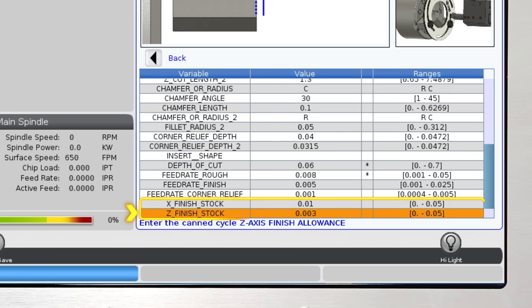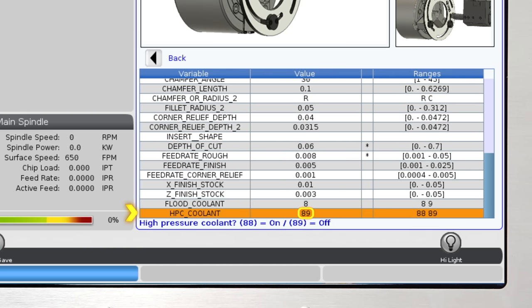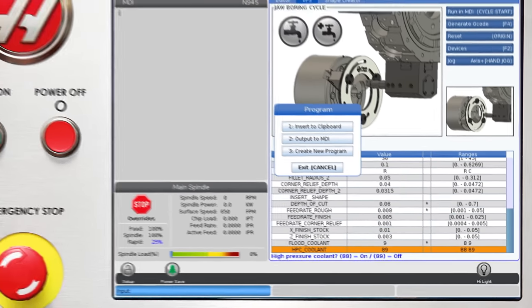The next two variables are specifically for rough cycles. I'm going to leave 10 thou stock on the X and 3 thou stock for the Z for the finish pass to machine. Finally, I'll enter my coolant data, then we can press F4 to generate the code and I'll output to MDI.